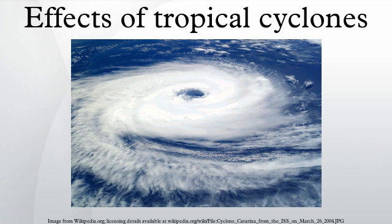The storm surge, or the increase in sea level due to the cyclone, is typically the worst effect from land-falling tropical cyclones, historically resulting in 90% of tropical cyclone deaths. The relatively quick surge in sea level can move miles inland, flooding homes and cutting off escape routes. The storm surges and winds of hurricanes may be destructive to human-made structures, but they also stir up the waters of coastal estuaries, which are typically important fish breeding locales.